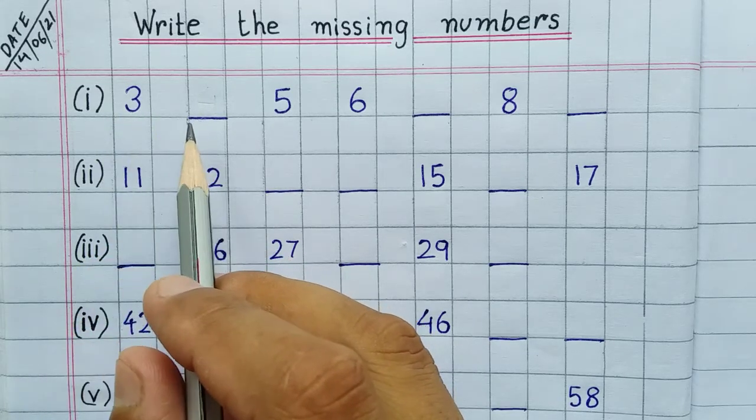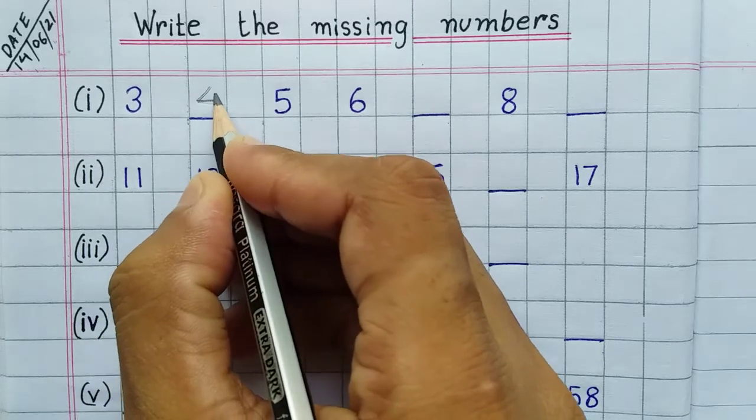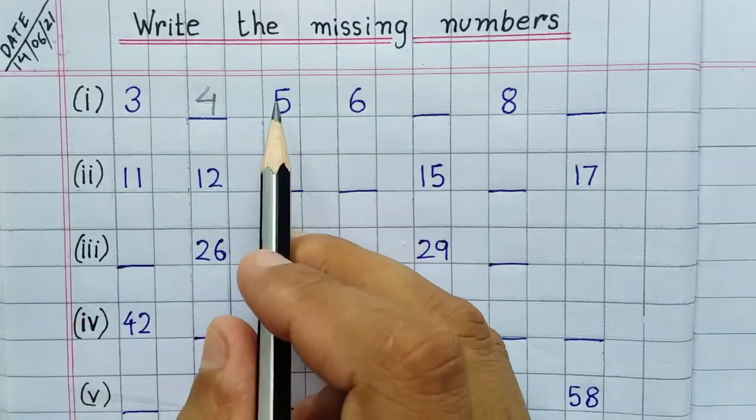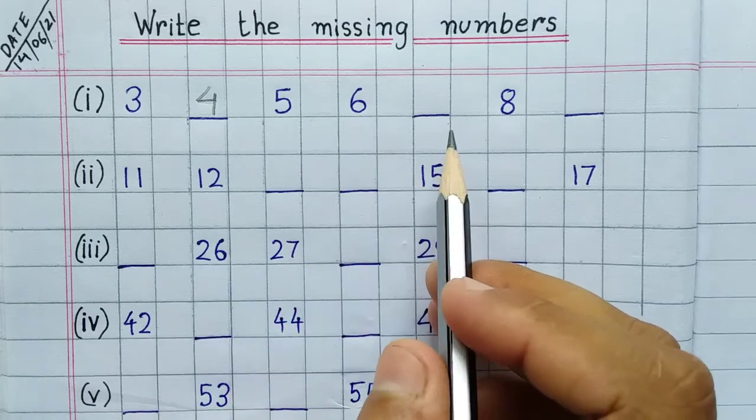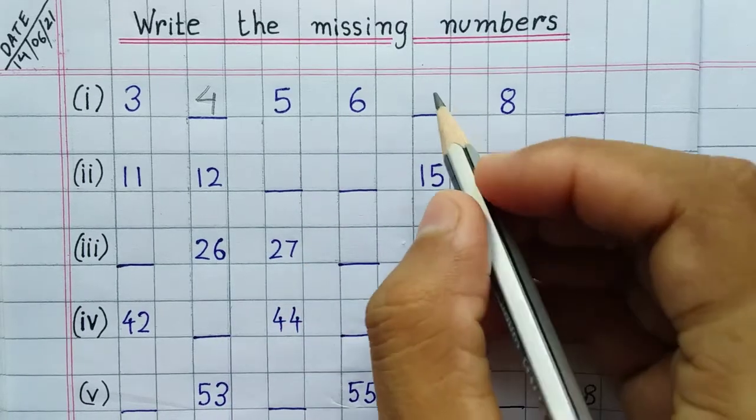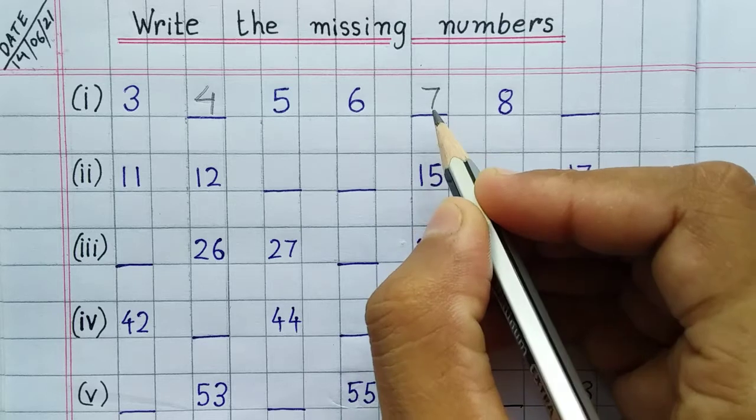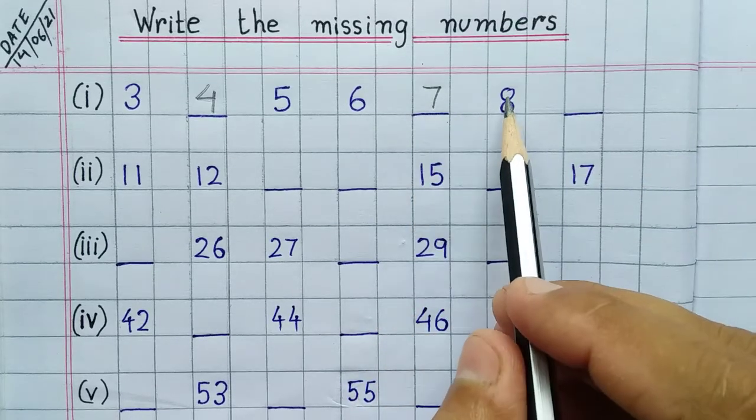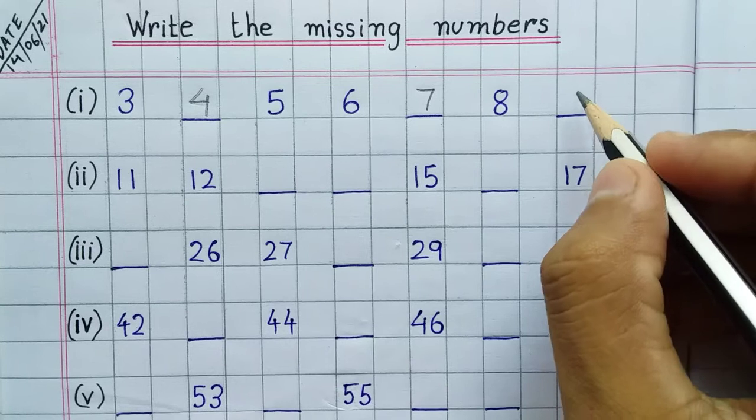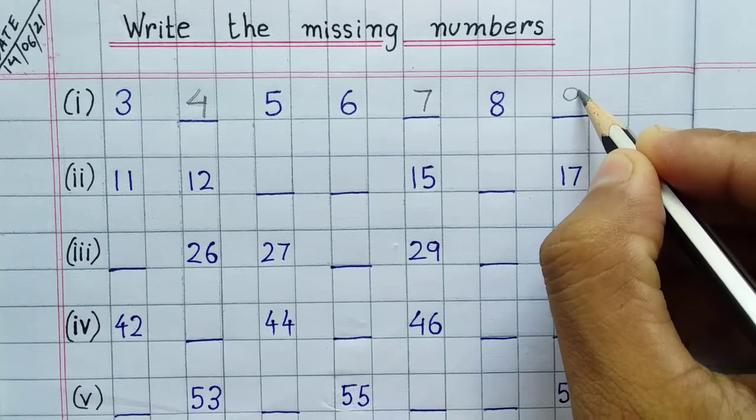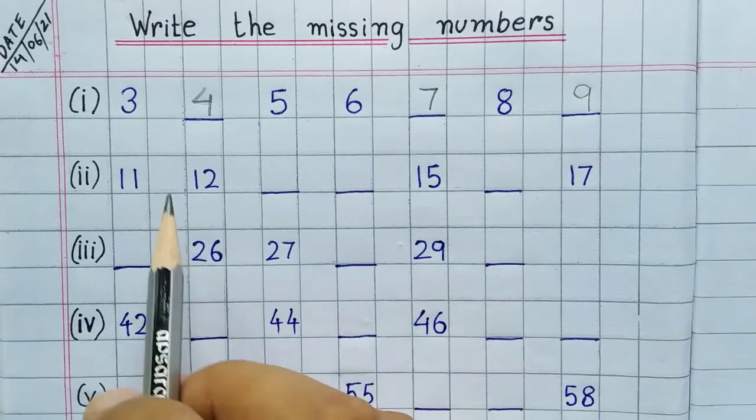Five, six, seven. Your seven is missing, so we'll write seven in the blank. After that, eight and nine. Nine is missing, so we'll write nine here. So our question number one is complete: three, four, five, six, seven, eight, nine.